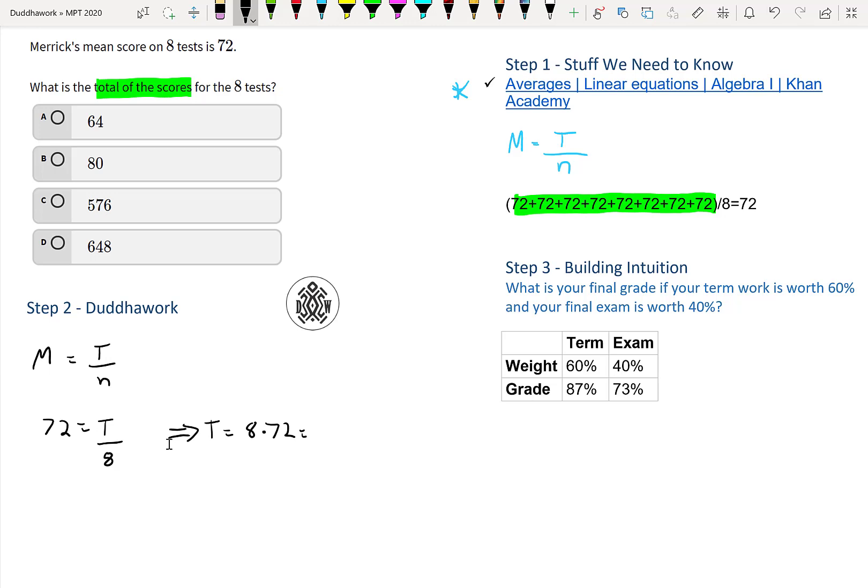And that is drum roll... it's the same thing as this here. Or we could also do eight times 72. And it should be 576. So we know that T is equal to 576.